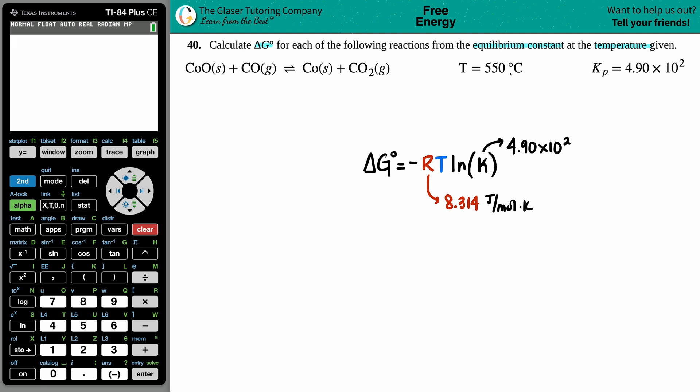If we're using kelvin here, the temperature has to be in kelvin. The first thing we got to do is convert the Celsius into kelvin plus 273.15. So I'll take the 550 and plus 273.15 and I get 823.15 kelvin.